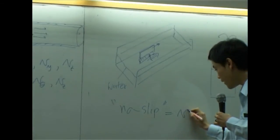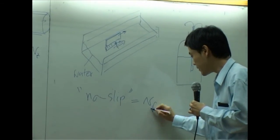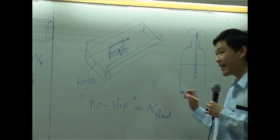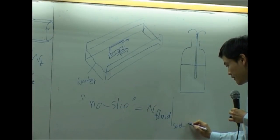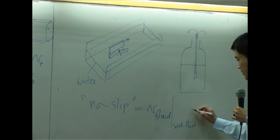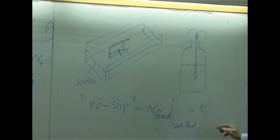That's called no slip condition. So for no slip condition, velocity of fluid at the interface, at solid fluid interface should equal to velocity of solid itself. This is condition called no slip condition.